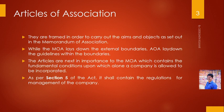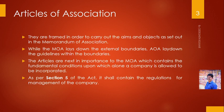Articles of association are framed in order to carry out the aims and objects as set out in the memorandum of association. Memorandum of association is a broad document which makes a boundary. So, memorandum of association lays down the external boundaries, while articles of association lay down the guidelines within those boundaries.